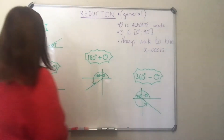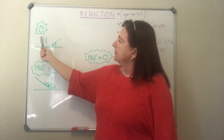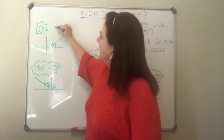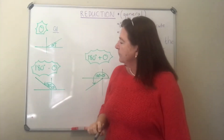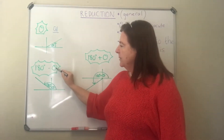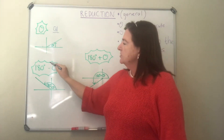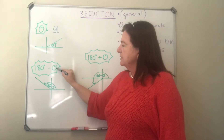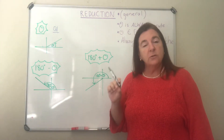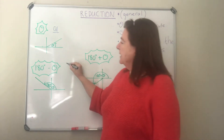So theta is going to be an angle — remember they always start going anti-clockwise, so theta would be an acute angle in quadrant one. If we have an angle which is 180 degrees minus theta — since theta is acute, let's say it's 20 degrees — 180 minus 20 degrees is 160 degrees. So irrespective of the size of theta, because it's always acute, 180 minus theta is always in the second quadrant.